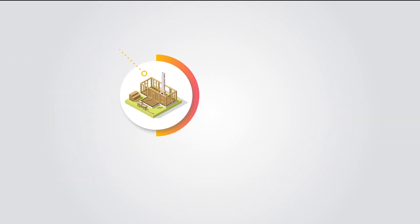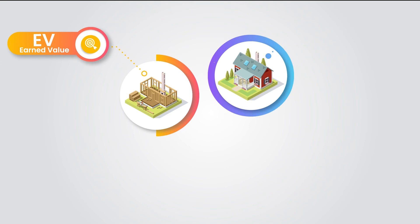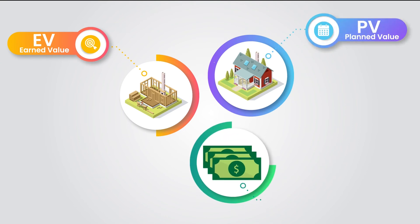If you accomplished less work than planned, meaning EV is less than PV, you're behind schedule. And if you spent more than you earned, meaning AC is greater than EV, you're overrunning the budget.